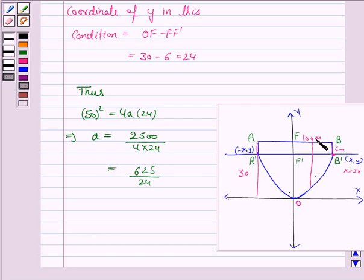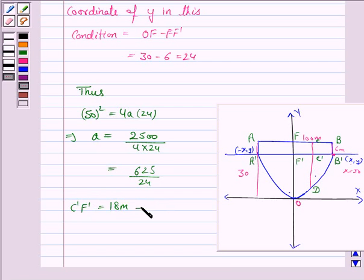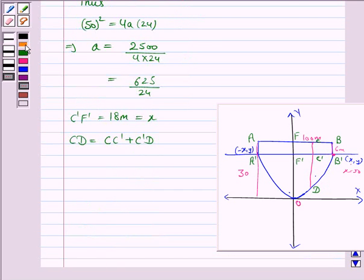Now we have to find the length of the supporting wire attached 18 meters from the middle of the roadway — that means we have to find the length CD. Let this point be C'. Now C'F' is given to be 18 meters, which means x = 18 at this point. The length of CD equals CC' plus C'D, and CC' is 6 meters, so it is 6 + C'D meters.